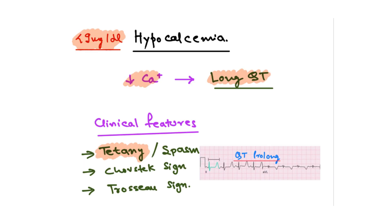Now we will cover calcium and its effect on ECG. First, hypocalcemia: as I mentioned, lowering of electrolyte levels leads to an inversely proportional increase in QT interval. So as calcium levels go down, a long QT interval will be seen. In a question, the clinical features will mention hypocalcemia findings like tetany, spasms, and the clinical signs of Chvostek's and Trousseau's. QT prolongation is seen with those clinical features, and calcium levels will be less than 9 mg/dL.